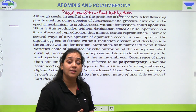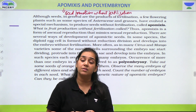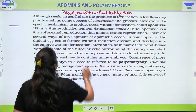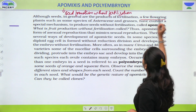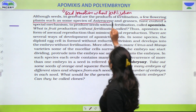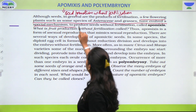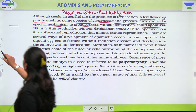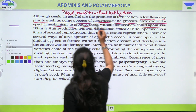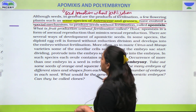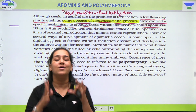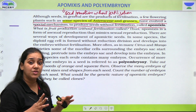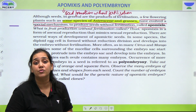Yeh kuch plants naturally dikhate hai because they have the genes for it. But in some plants we can induce it — this is what the researchers are trying to do. All those seeds in general are products of fertilization, but a few flowering plants such as some species of Asteraceae and grasses have evolved a special mechanism to produce seeds without fertilization and that is called as apomixis. Example bohot important hai. Some species of Asteraceae and grasses — Asteraceae is the sunflower family, sooraj mukhi — wahan ke kuch species and grasses have this ability naturally, unmein wo genes hai jo help karte hai in the process of apomixis.